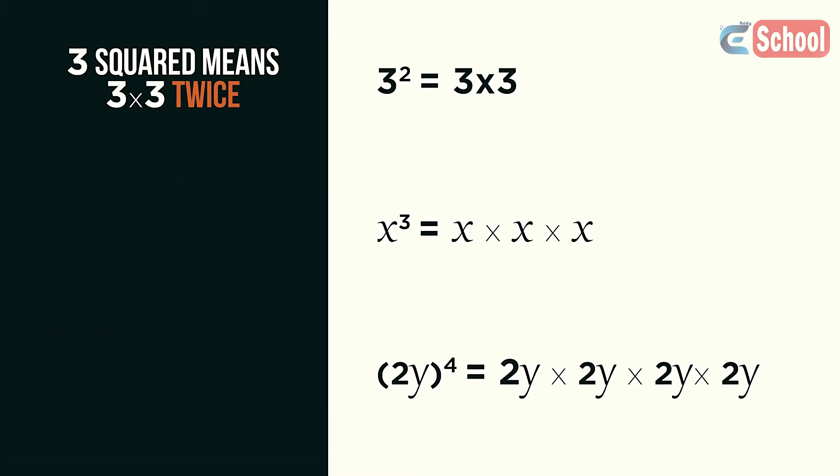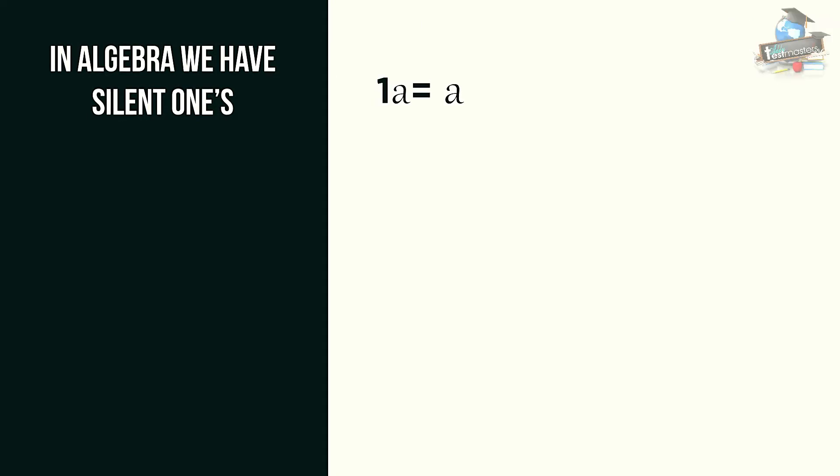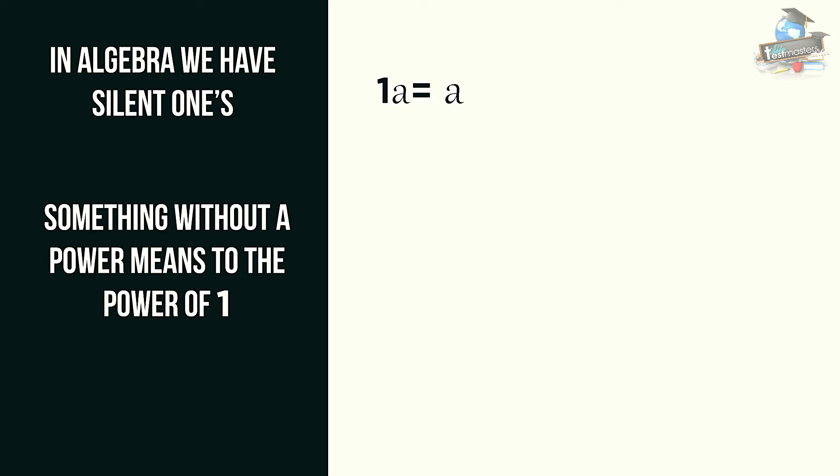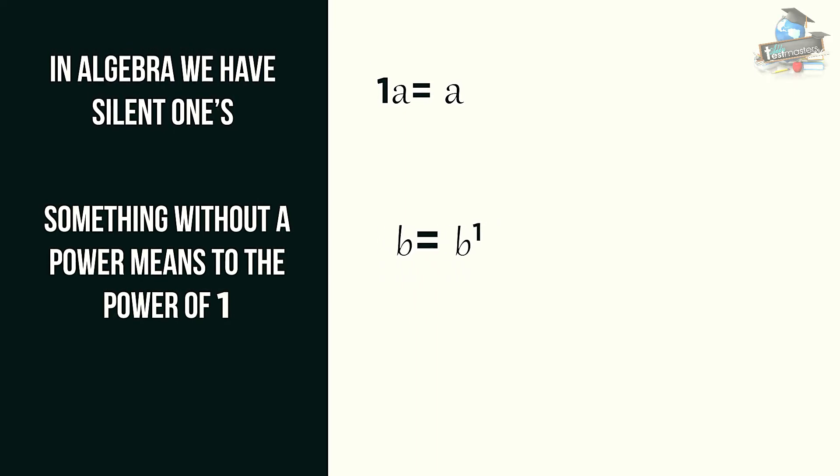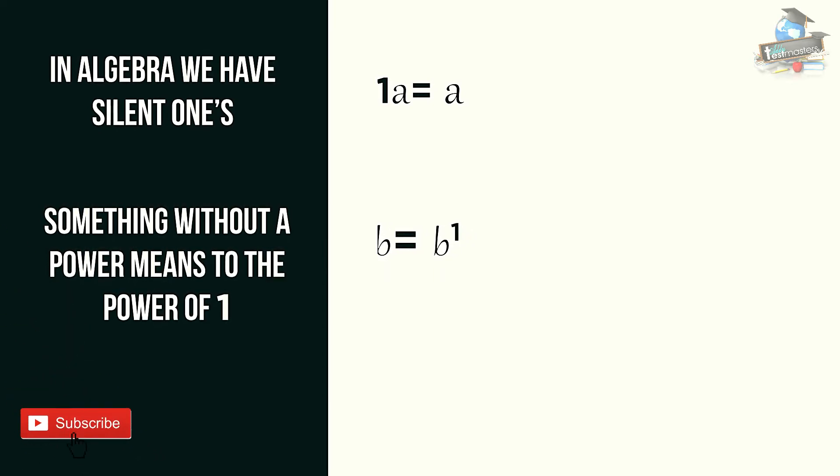You know how in algebra we have silent ones so we don't write 1a we just write a. Something without a power so b for example really means b to the power of 1. But the 1 is silent so we don't write it.